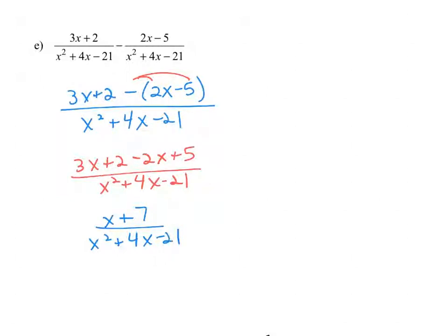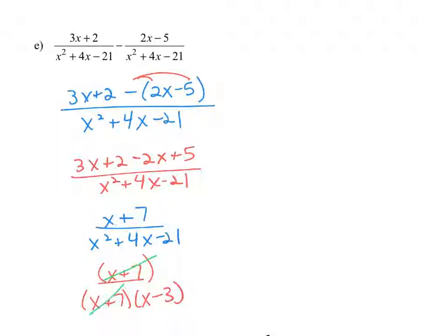We can simplify further by factoring the denominator, keeping the numerator as x plus 7. The denominator factors into x plus 7 and x minus 3. We have a common factor in the numerator and denominator, so dividing those out leaves us with 1 in the numerator over x minus 3. So our final answer is 1 over x minus 3.